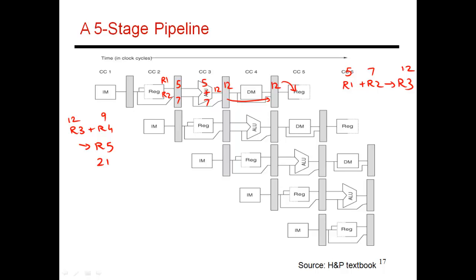For the consuming instruction, if I let it start in the second cycle, this is where I read out of R3 and R4. R4 has the value 9. But if I read R3 at this point, I get some old and outdated value — let's say 75. So in the next stage, I would end up doing 75 plus 9, which is not what I want. What I want is 12 plus 9.